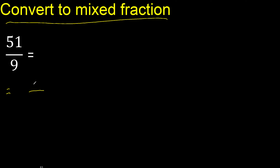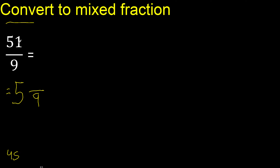First, the same number here: 9. 9 multiplied by which number is nearest to 51 but not greater? 9 multiplied by 6 is 54, which is greater. 9 multiplied by 5 is 45, which is not greater. Subtract: 51 minus 45 is 6.